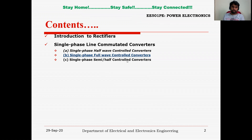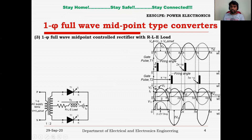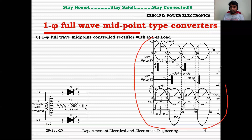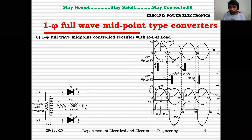Now we will focus on one more load. This is R, L, E load, where R is the resistance, L is the inductance, E is the battery. This is a circuit configuration in which the transformer is a secondary center-tap transformer. We will look over the expected waveform, then go to the circuit configuration.